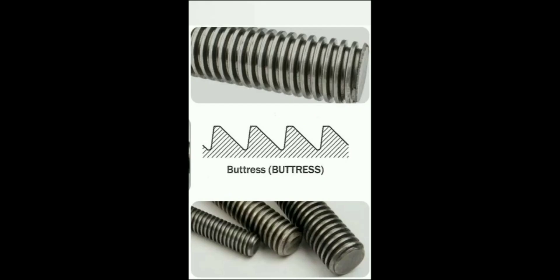Disadvantages: Buttress threads are optimized for axial force predominantly in one direction and may have limited load capacity in the opposite direction. The asymmetric profile may require specialized tooling and machining processes, increasing manufacturing complexity and cost. Due to their high load capacity and self-locking nature, buttress threads may be prone to galling or seizing during assembly if not properly lubricated or aligned.